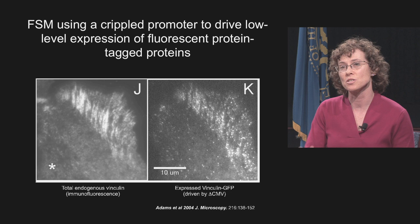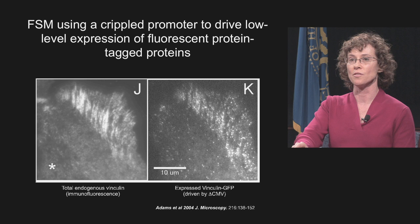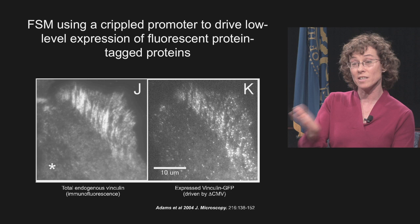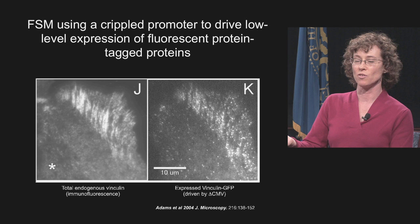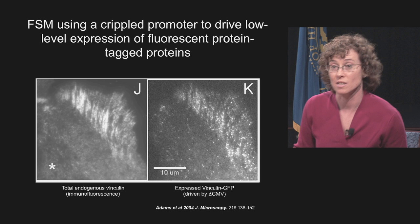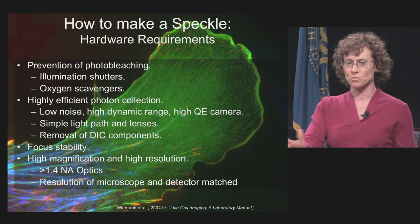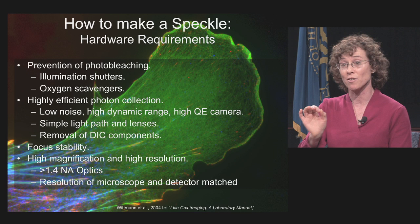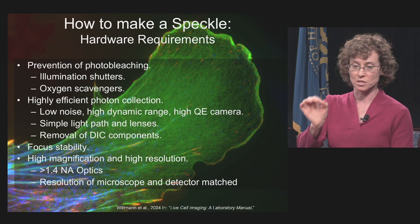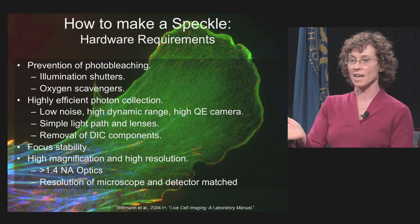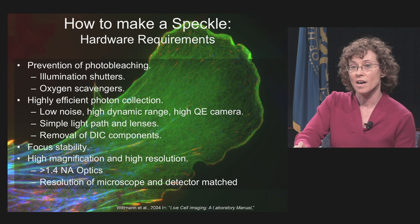Here's an example of low-level expression compared to total protein: fluorescent vinculin expressed in the adhesion complexes of a migrating cell. The right shows low-level expression driven by a truncated CMV promoter, and the left shows endogenous vinculin imaged by immunofluorescence — you see a very small fraction of the actual molecules, but because of this you can see the dynamics. For hardware, you want to prevent photobleaching with illumination shutters, use a high quantum efficiency camera, remove extraneous optical elements, ensure focus stability, and use the highest magnification and resolution optics possible.